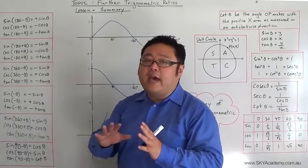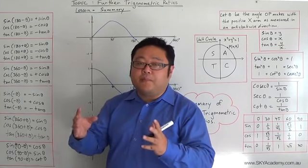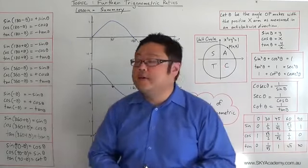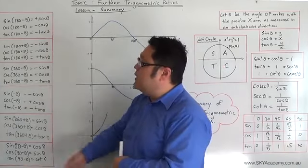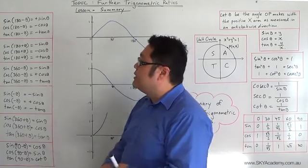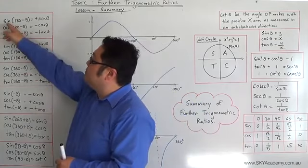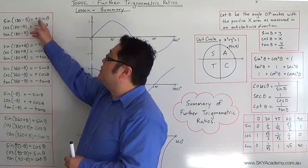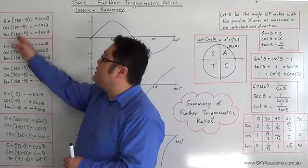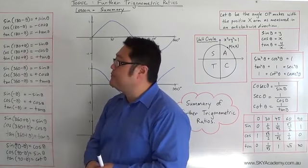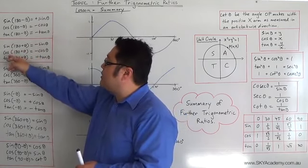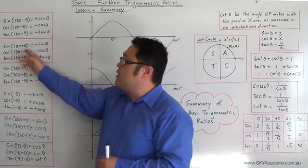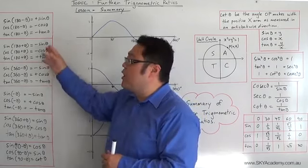We worked out that there are symmetrical properties between the first quadrant and the second, third, and fourth quadrants, which are illustrated here. In other words, the sin of 180 minus theta is equal to the positive sin of theta, whereas the cos and tan versions would be the opposite sign. We worked out that the tan of 180 plus theta is equal to the tan of theta, and that the sin and cos versions will be opposite in sign.